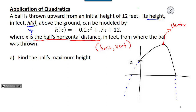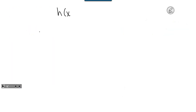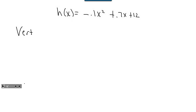Before we even do that — if the questions are asking me about a maximum, that tells me I'm going to need both pieces of this vertex. I can find the x value at the vertex by doing negative b divided by 2a, and then I can find the y value by taking that x value and plugging it into my function. So we've got our function h of x equal to negative 0.1x squared plus 0.7x plus 12.